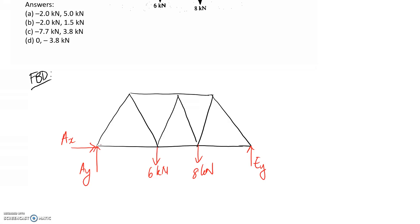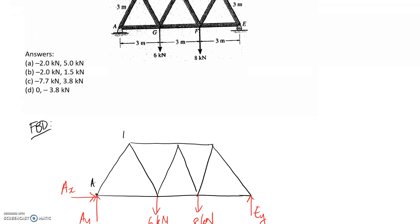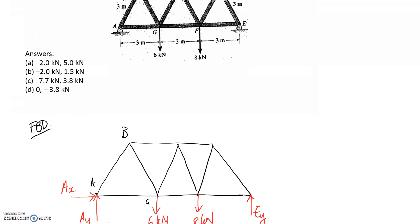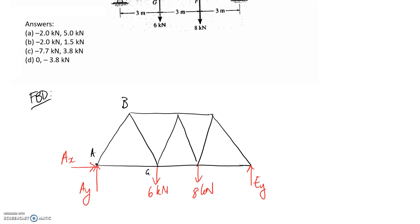If I want to analyze this joint here on the end, A, because that's where my this one and this one, which I'm trying to work out. Let's label them. So this is B and this is G. If I want to analyze this joint here to get AB and AG's force, I need to figure out what these reactions are.